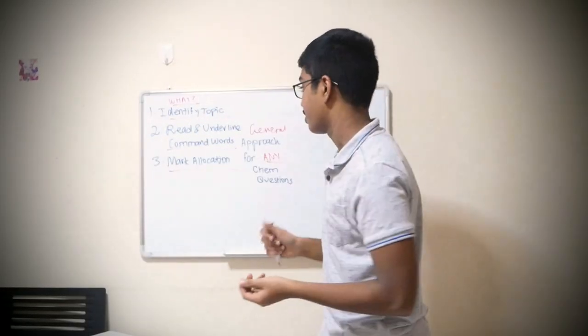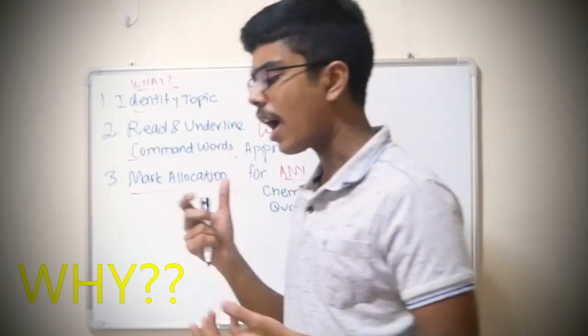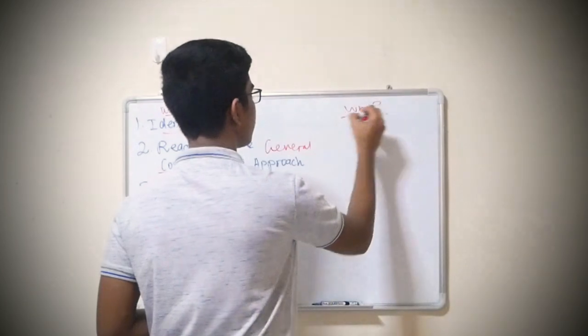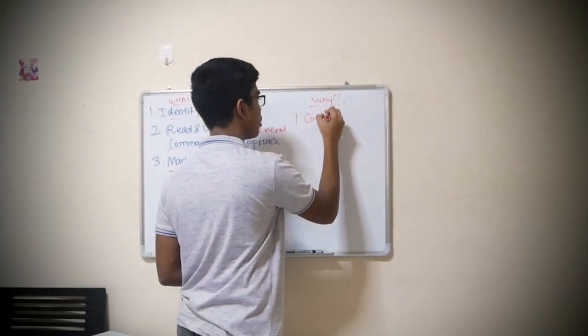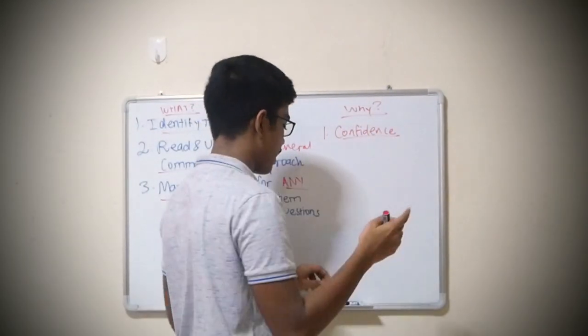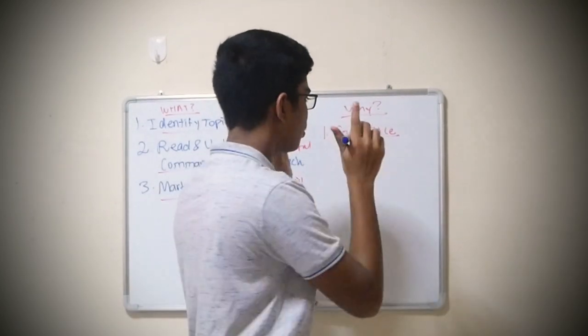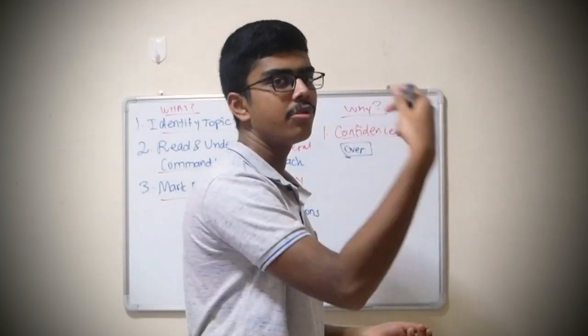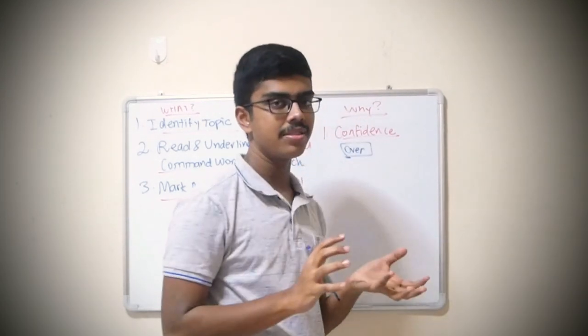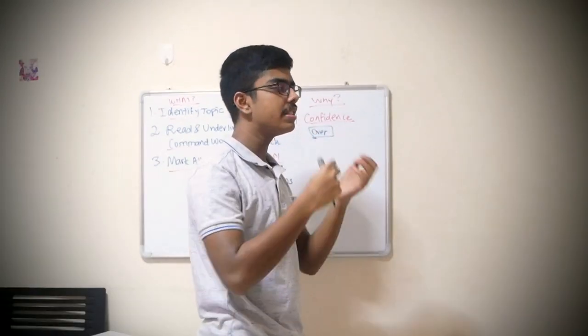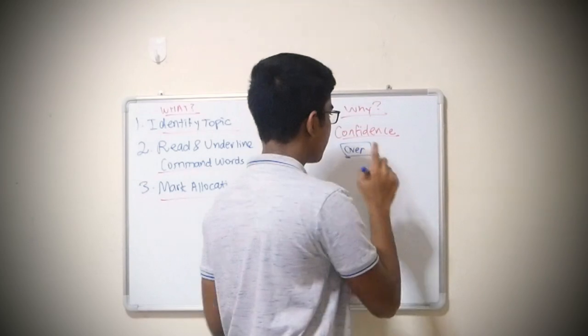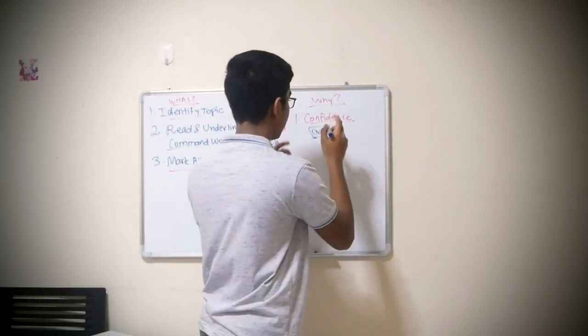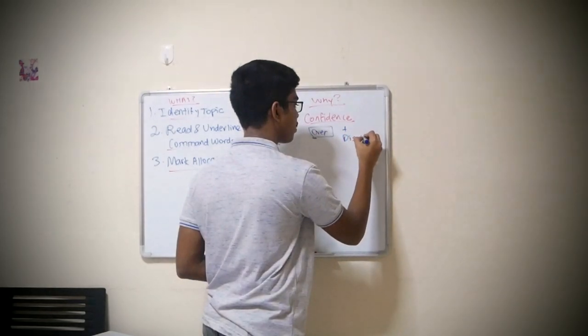For you guys to get convinced why this approach works: number one, for those struggling with A-level chemistry, it's not just the content - it's about confidence. I don't want you guys to have too much overconfidence, which is a great trap that sets apart good and bad scoring people. Too much confidence will pull your marks down. You neglect small nuances and command words that could have easily gotten you marks. Chemistry requires a balance between confidence plus discipline.